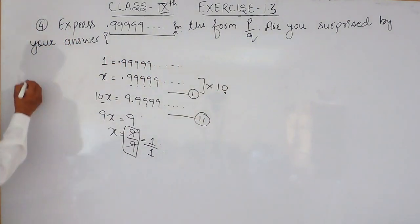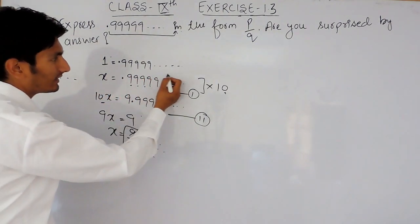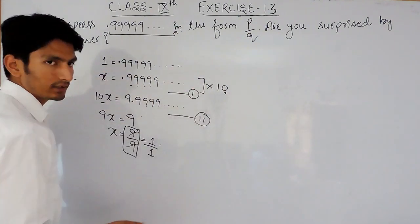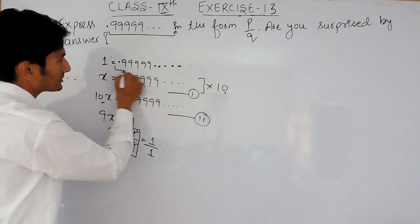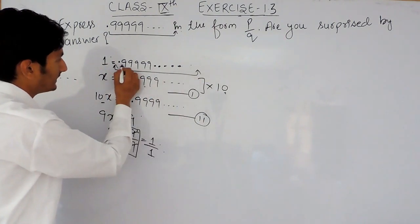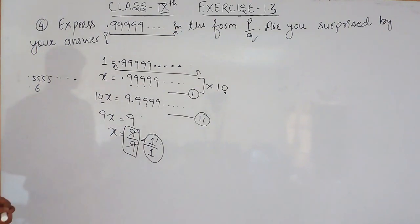If I am saying it is 0.555555 repeating, obviously this will be very close to 6. Similarly, if that is 0.999999 repeating, that will be very close to 1, because this goes till infinity. So because this expression will be very close to 1, that is why your answer is 1 for this particular question.